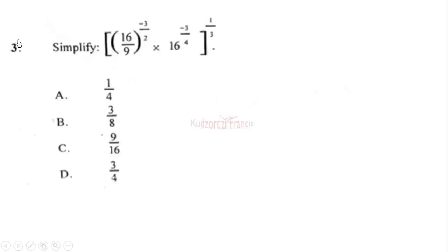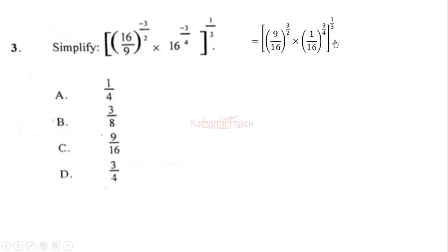Question three: we have to simplify this expression. We can rewrite it by flipping and changing the sign to positive — that is, we reciprocate and change the sign from negative to positive. The numerator is 4; raising the numbers to exponent 4 gives us 16, which is 2 to the power 4. Then 4 squared equals 16 and 3 squared equals 9.